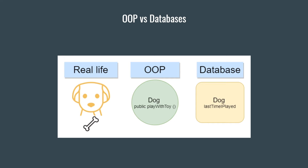For example, a real-life dog does things — let's say he plays with a toy. A dog object from object-oriented programming also does things; he plays with a toy using a public method called playWithToy. A dog from the database knows when he played the last time, but he can't play. The service plays for him.